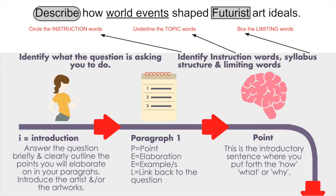You need to underline the topic words — what have you been asked to describe? You've been asked to describe how world events shaped something; that's the topic. We also need to work out what the limiting words are. In this case, we've been asked to apply it to the futurists. So the question is: describe how world events shaped futurist art ideals. I've circled the instruction word, underlined the topic words 'world events,' and boxed the limiting words, which is 'futurists.'